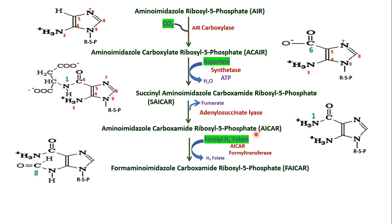Next, a formyl group is transferred — again the enzyme is a formyl transferase. On AICAR, formyl transferase acts: the amino imidazole becomes formyl amino imidazole. The C8 of the purine ring is supplied by formyl tetrahydrofolate. The product is formyl amino imidazole carboxamide ribosyl 5-phosphate (FAICAR).